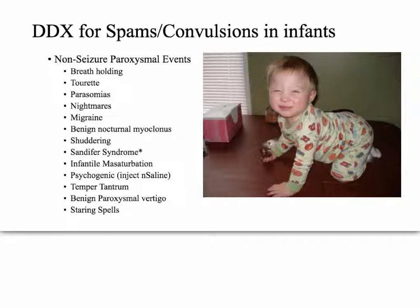Non-seizure paroxysmal events are various things that can happen that may or may not be exact true seizures. The first one is breath holding — this is actually going to cause a true seizure, because low oxygen is a metabolic cause of seizures. It presents right around six months to three years, so in our case with a three-week-old, that's not going to be the cause.